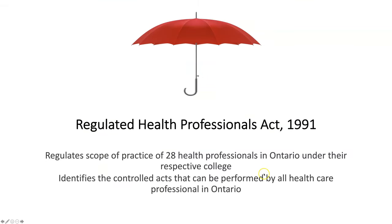I wanted to review the Regulated Health Professions Act of 1991. The RHPA regulates the scope of practice of the 28 health professionals in Ontario under their respective college. The RHPA is the umbrella that identifies the controlled acts that can be performed by all healthcare professionals in Ontario.